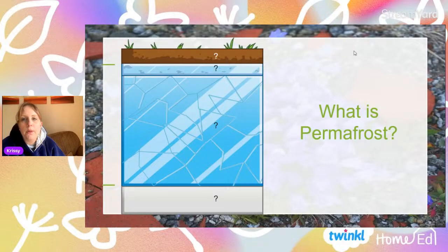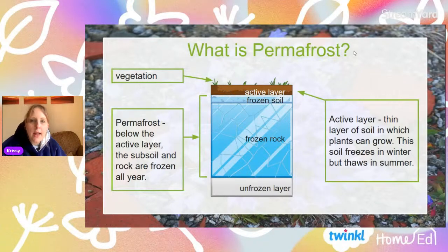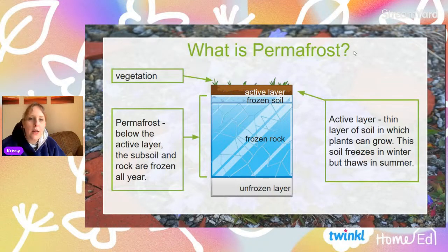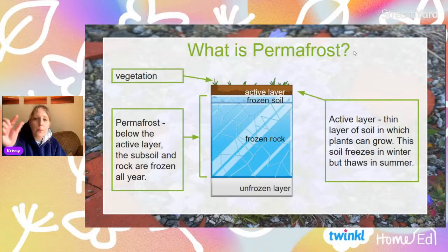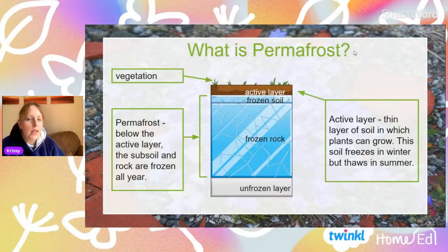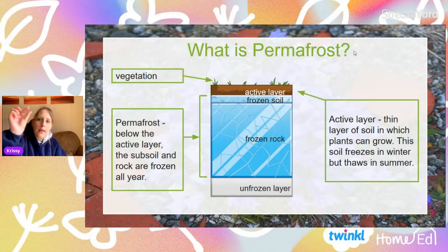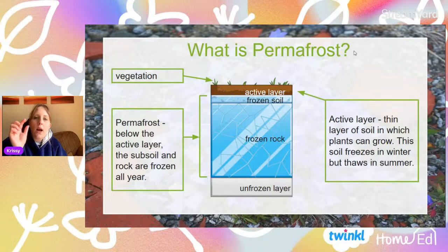So the top layer — the geography term is that this is known as the active layer. This is basically a thin layer of soil, and this is where any plants in the tundra will grow. This soil does freeze in the winter, so nothing really grows even in the tundra during the winter — a bit like here. But then in the summer, this active layer thaws, and that's what allows vegetation to grow in the tundra.